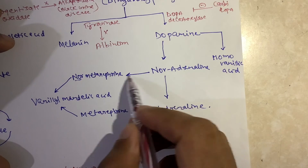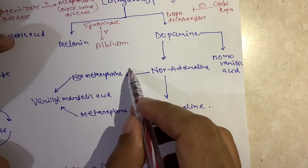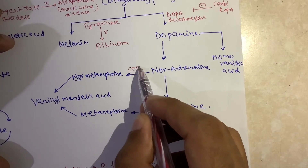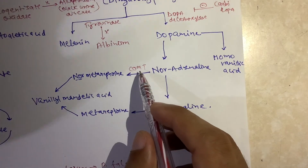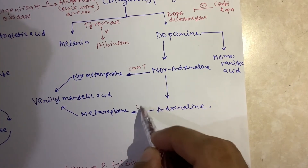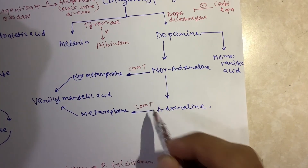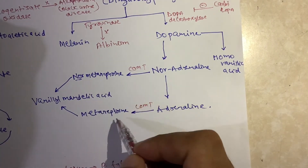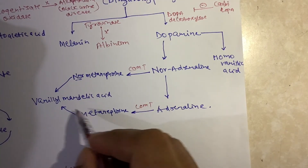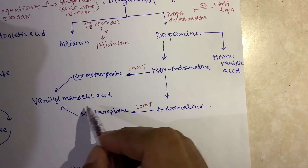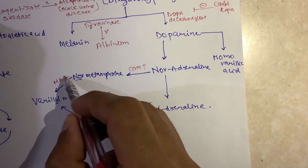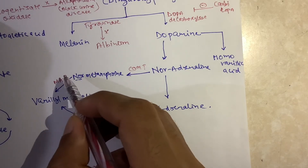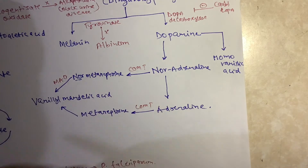Noradrenaline is converted into normetanephrine by the enzyme COMT, which stands for catechol-O-methyltransferase. Normetanephrine and metanephrine are then converted into vanillylmandelic acid (VMA) by MAO, which stands for monoamine oxidase.